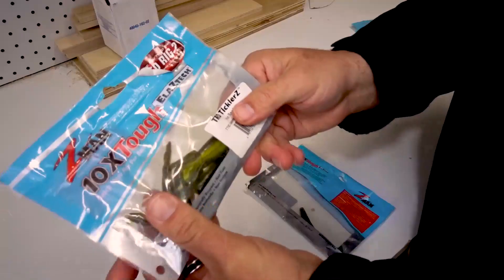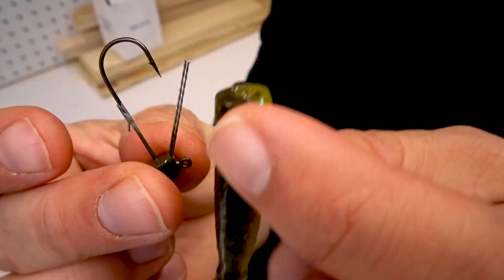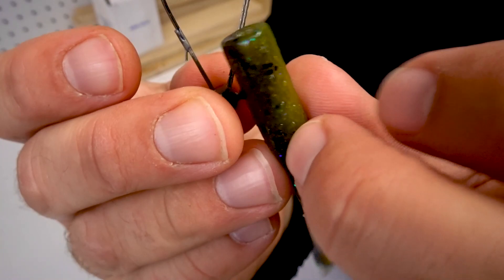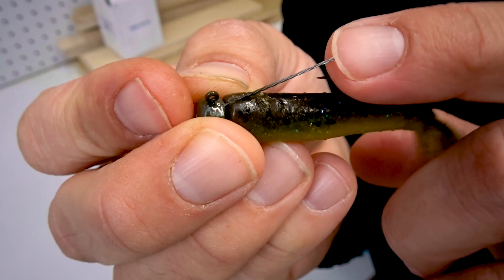Moving on with number five, the TRD tickler Z with a shroom Z wheel jig head. Rigging this up is just like the last two, but just be sure to spread the two wires apart for the weedless part. You spread them apart just a little bit, I find this helps a lot.